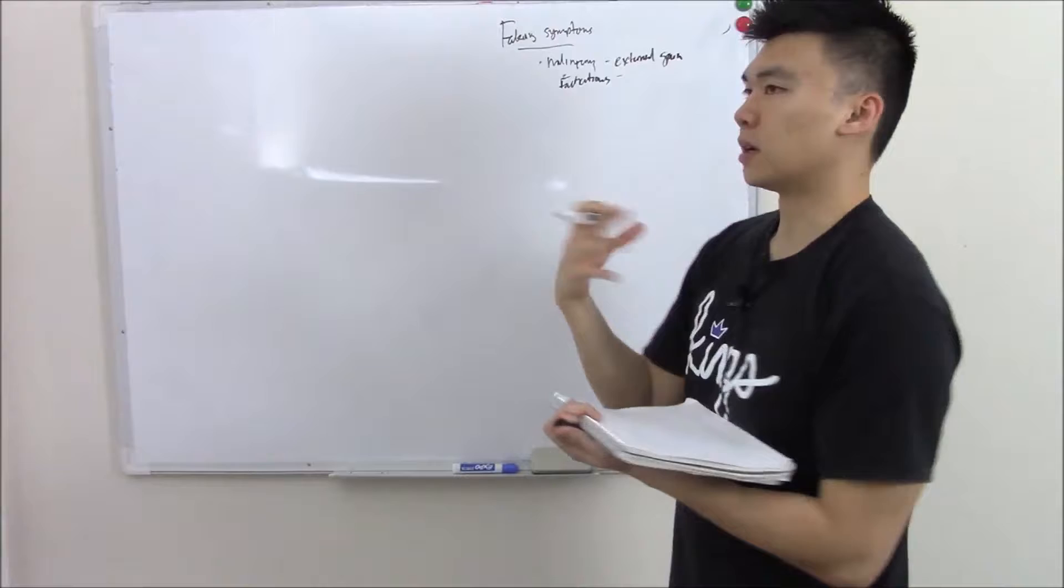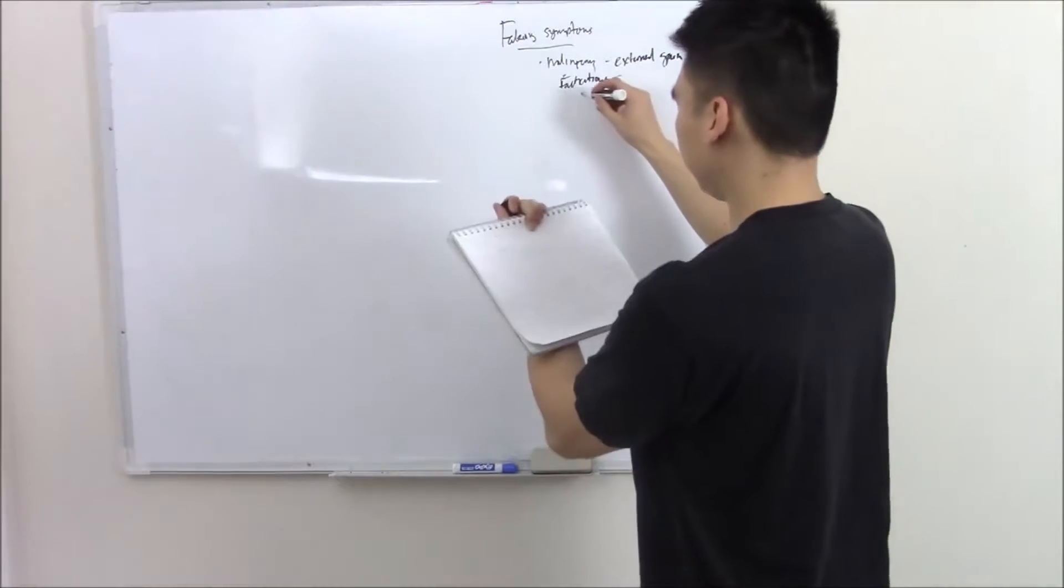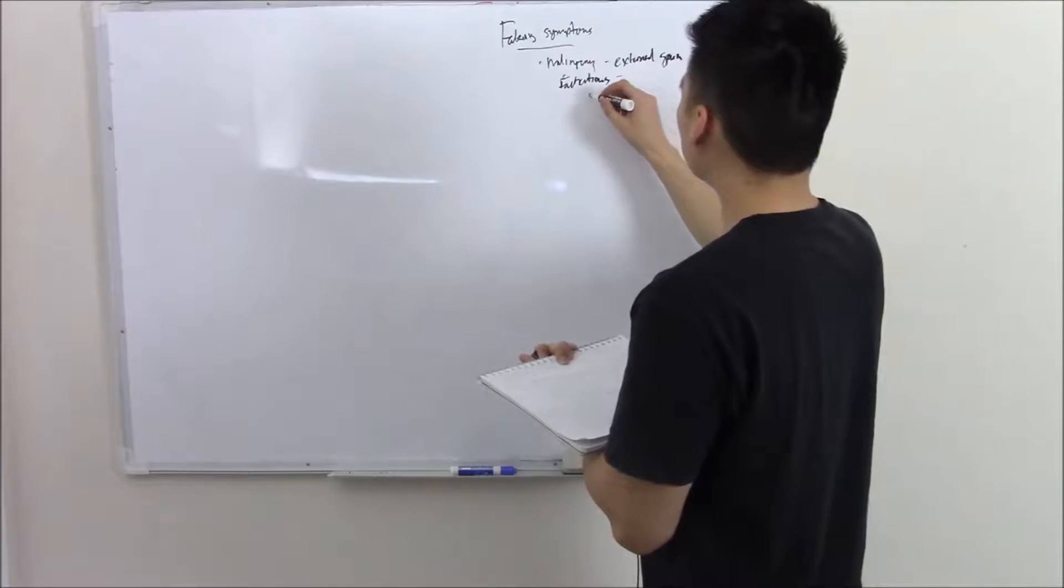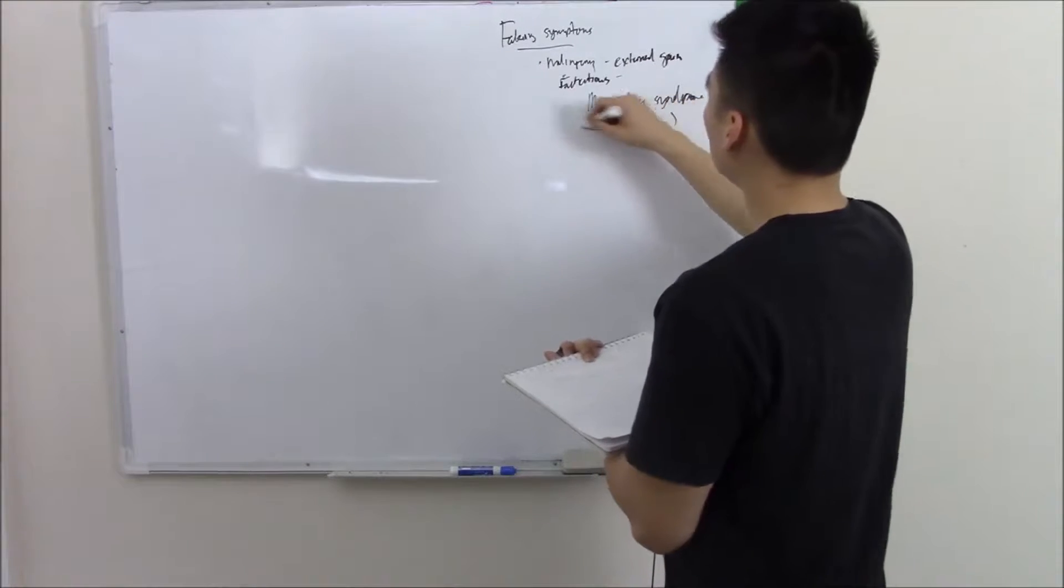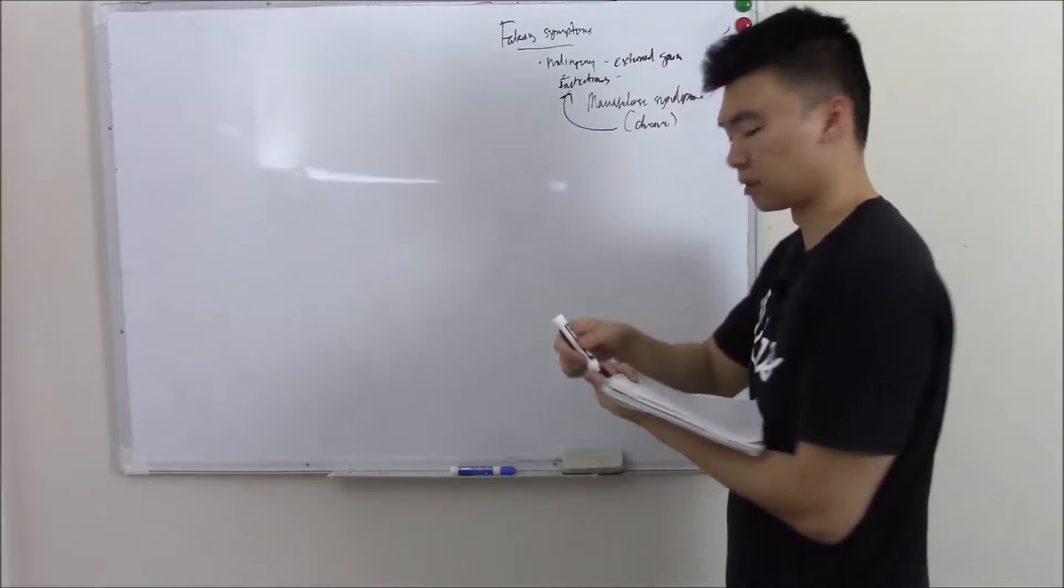Now this could be a one-off thing, but if it becomes chronic, we call it Munchausen syndrome. So this is just a chronic form of factitious disorder.